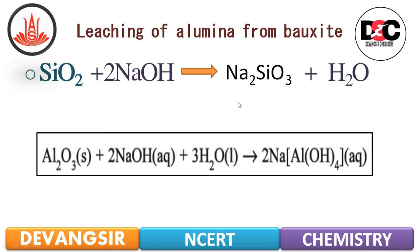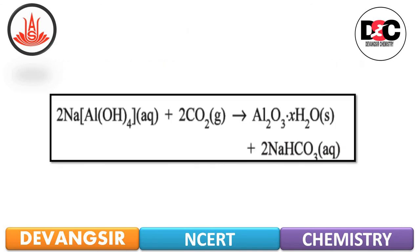The conditions for this reaction: the concentration is carried out by digesting the powdered ore with a concentrated solution of NaOH at 473 to 523 Kelvin temperature and 35 to 36 bar pressure. Then 2 NaAl(OH)4 reacts with carbon dioxide gas to give Al2O3·XH2O plus NaHCO3.